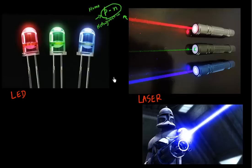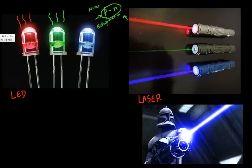So what's the difference? To understand the difference, let's look at the light that these devices generate. Both LEDs and lasers give out light. In the case of LED, this is a green LED, this is a red LED, and this is a blue LED. And similarly over here, this is a blue laser, this is a green laser, and this is a red laser.